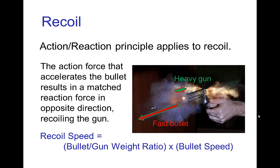In recoil, we have a force which is propelling something — say, like a bullet. A gun fires a bullet; there is a force that pushes the bullet away from the gun. If that's the action, then there has to be a reaction which pushes the gun away from the bullet.